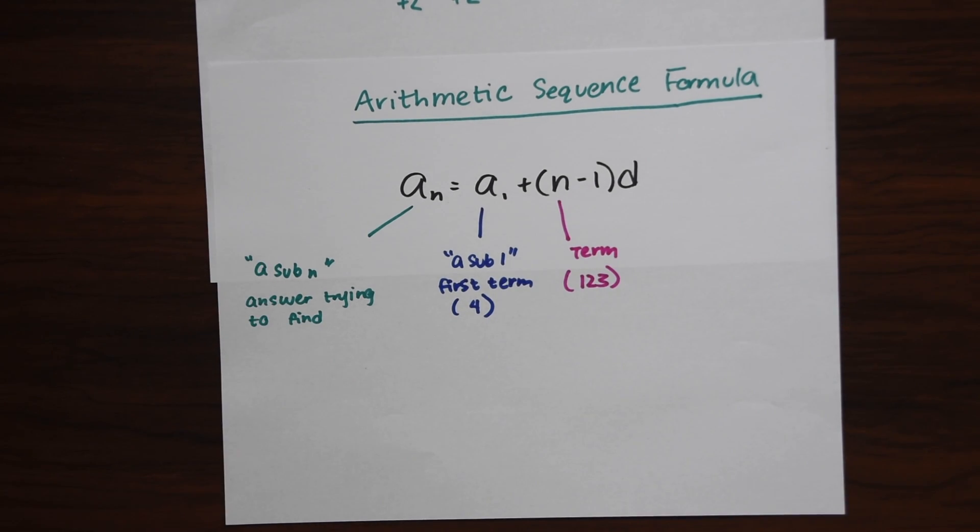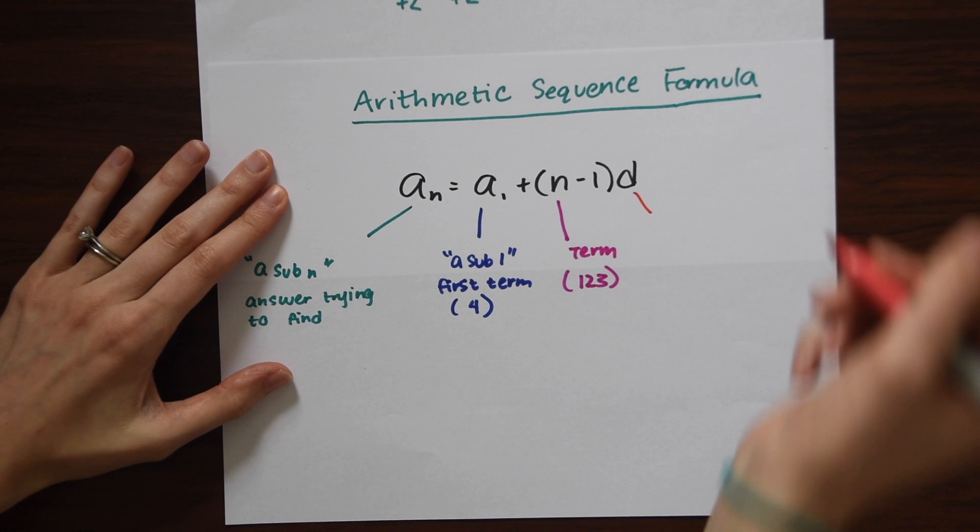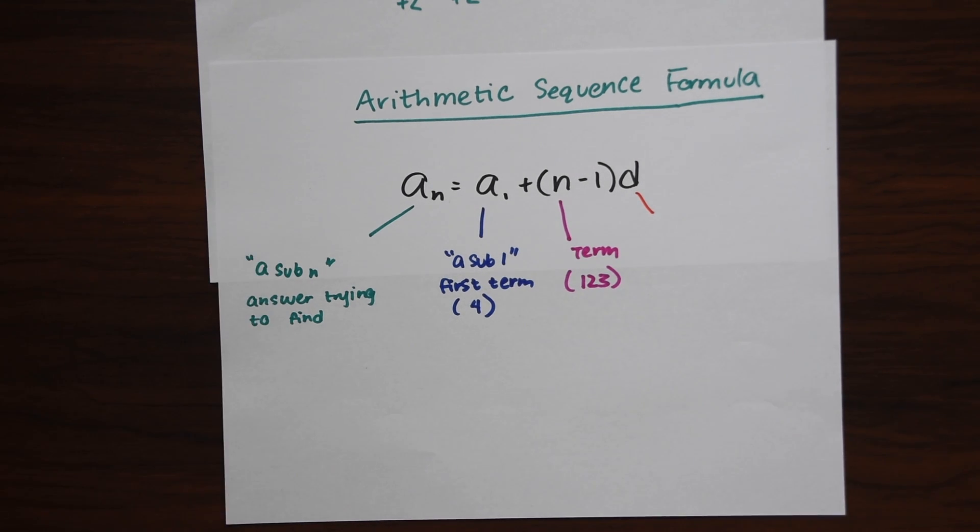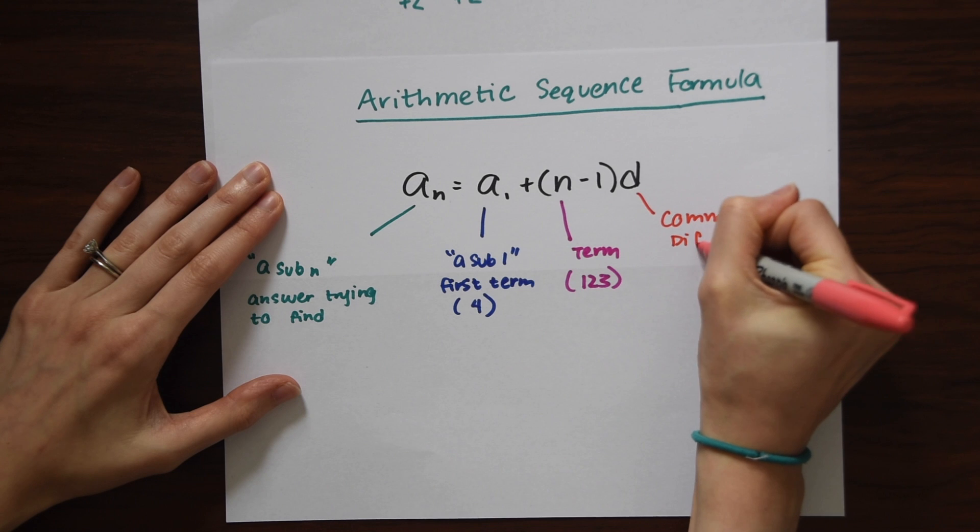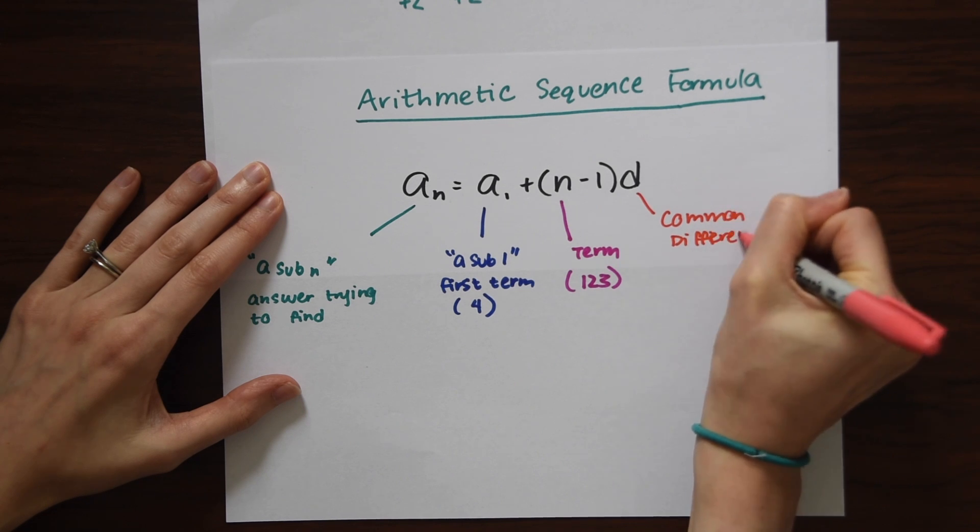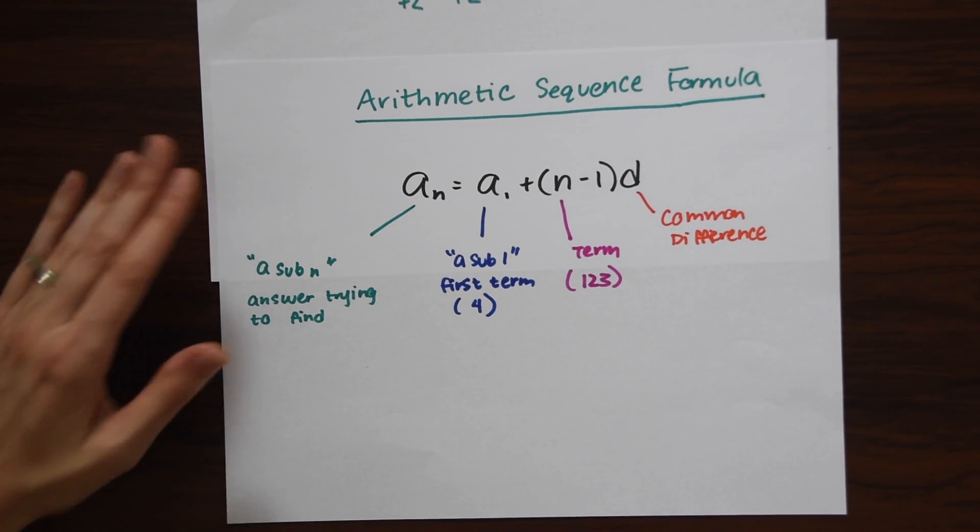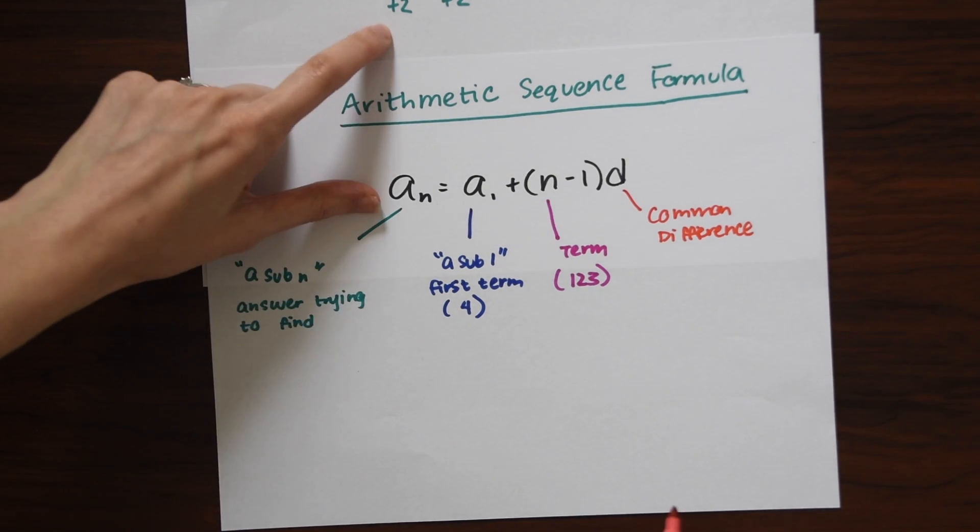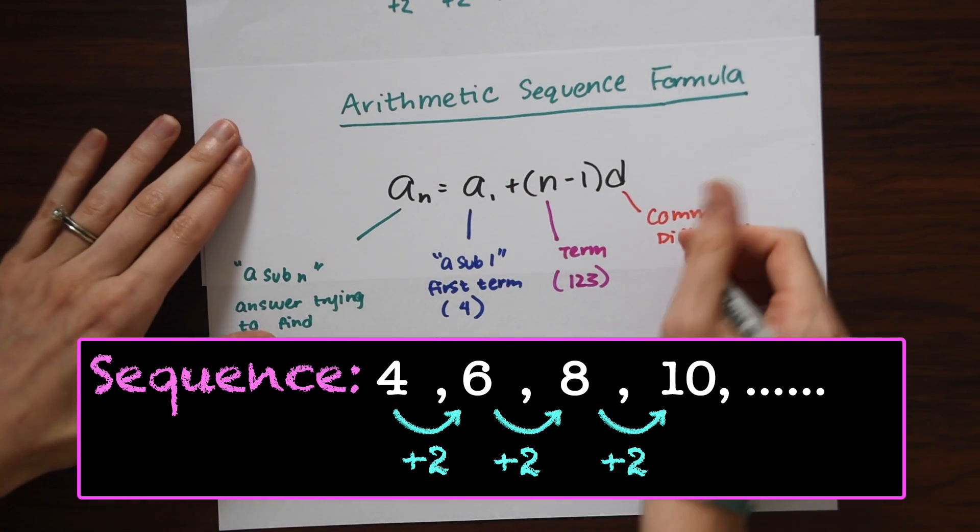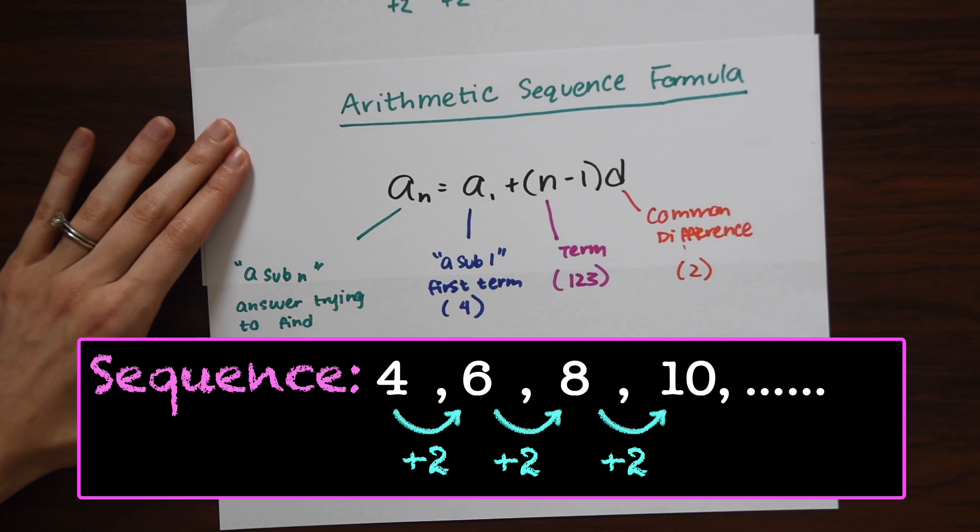And the last part is D, the common difference, which is significant for arithmetic sequences only. And this just means the number we're adding or subtracting to each term within the sequence. In this case, we're adding 2 to each number in the sequence. So in this case, this is just 2.